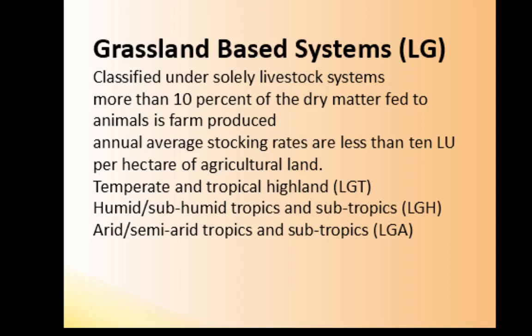For grassland-based systems, more than 10 percent of the dry matter is produced by the farm, and the annual average stocking rates are less than 10 livestock units per hectare of agricultural land. Examples include temperate zones and tropical highlands (LGT), humid and subhumid tropics and subtropics (LGH), and arid and semi-arid tropics and subtropics (LGA).